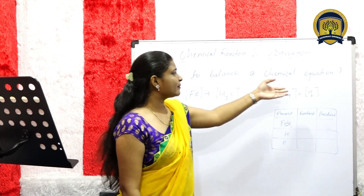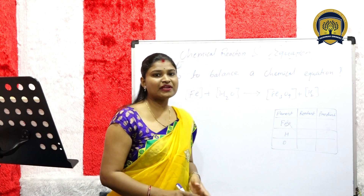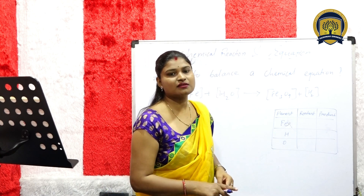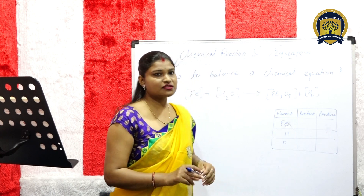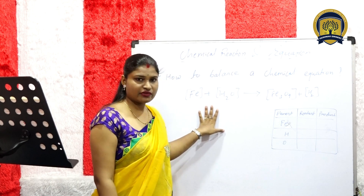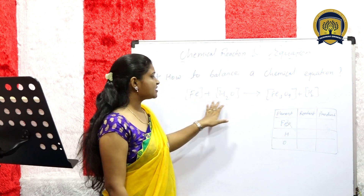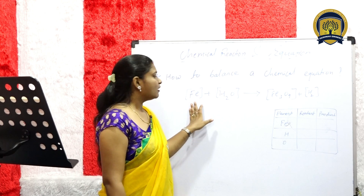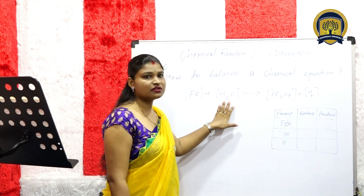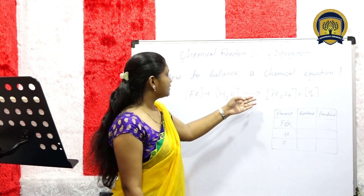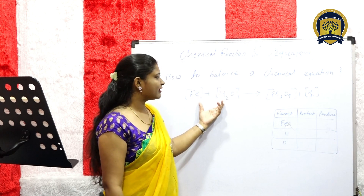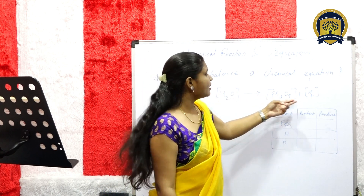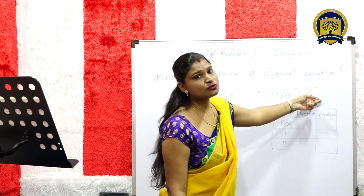Next, how to balance a chemical equation. When we create a chemical equation, we need to balance it. Here we have an equation: iron plus water. Fe and water symbol is H2O. When we react both, we get Fe3O4 plus H2 gas.